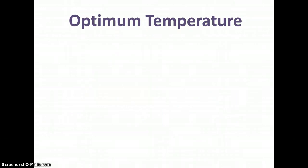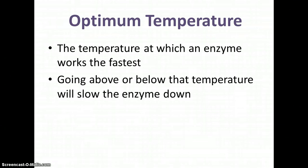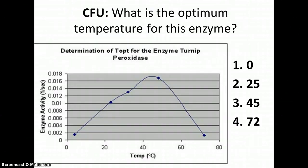Another important point about enzymes is that they all have an optimum temperature. The word optimum means best, so the optimum temperature for an enzyme is the temperature at which the enzyme goes the fastest. If you go above or below that temperature, the enzyme is going to slow down and the reaction won't happen as fast.